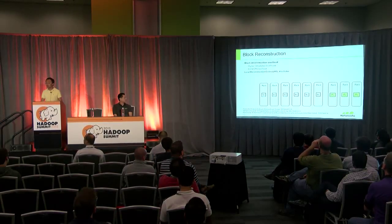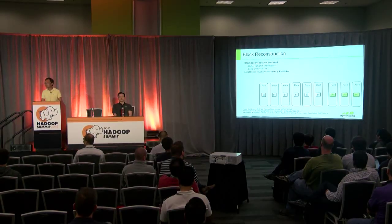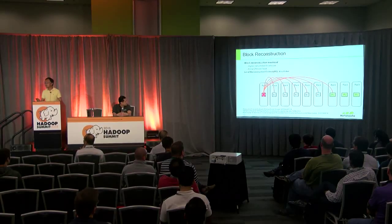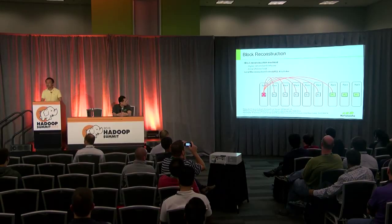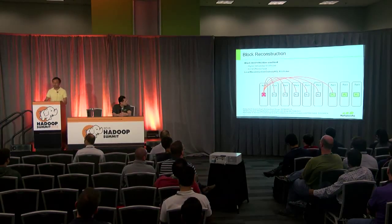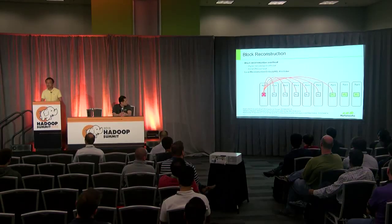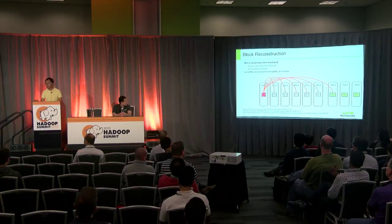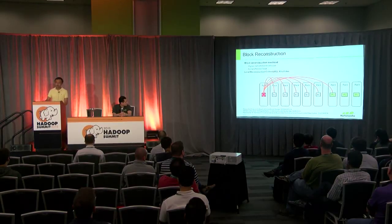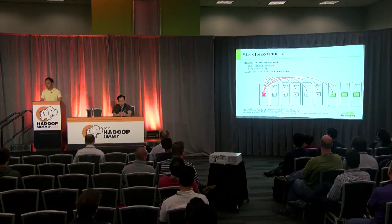In a typical erasure coding setup, blocks are placed on individual racks. If we lose block b1, we have to copy six blocks across racks to do reconstruction, which can overburden the top-of-rack switches and routers. As an improvement, people have developed different coding algorithms like LRC, and Facebook has a system called Hitchhiker with novel coding algorithms. HDFS erasure coding also plans to adopt these algorithms — some JIRAs have been created and initial patches posted.